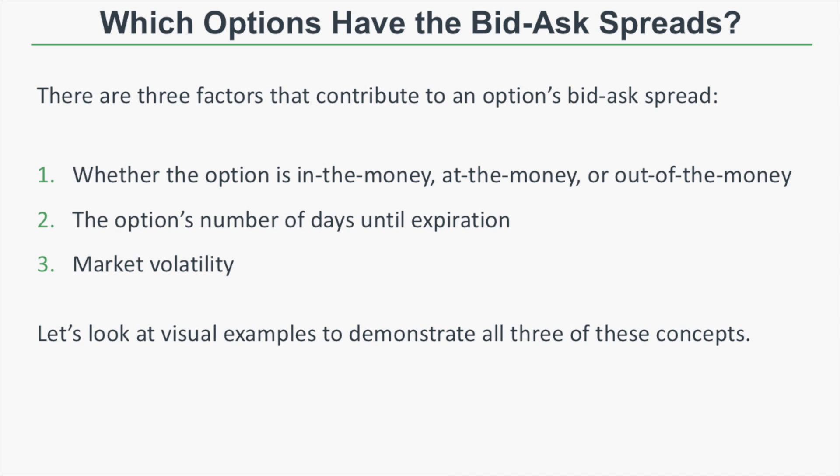Now that you know the basics of what the bid-ask spread represents, let's talk about factors that contribute to a wider or narrower bid-ask spread. The three things we're going to cover are whether an option is in the money, at the money, or out of the money; the option's number of days until expiration; and the overall level of market volatility. We'll look at visual examples to demonstrate all three concepts.